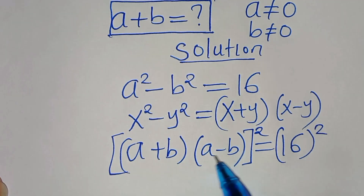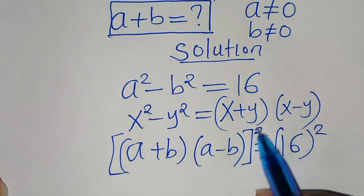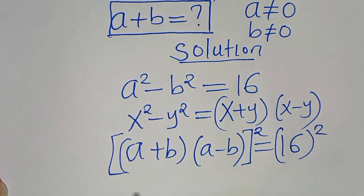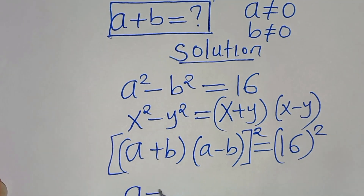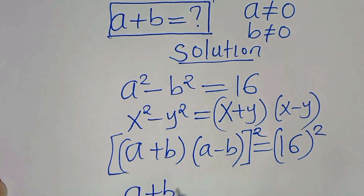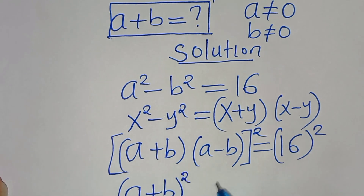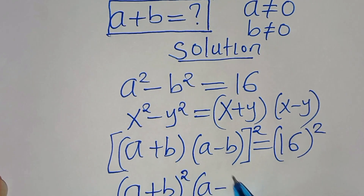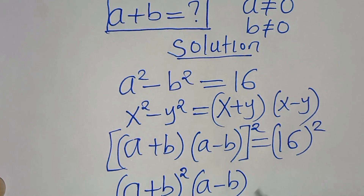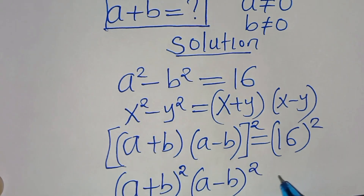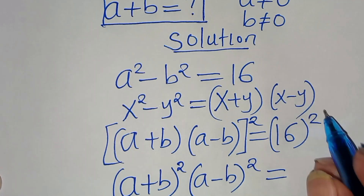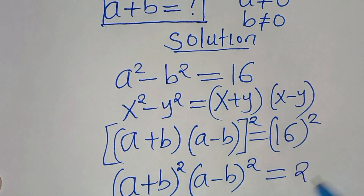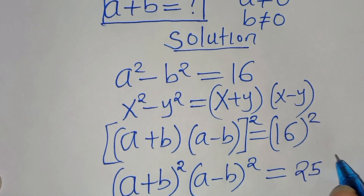Now, a plus b times a minus b, raised to the power of 2, can also be expressed as a plus b raised to the power of 2, multiplying by a minus b raised to the power of 2, and this is equal to 16 squared, which is 256.